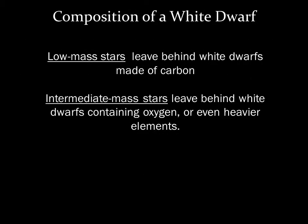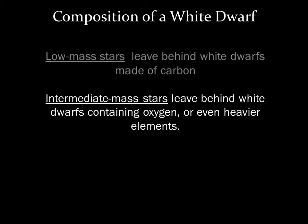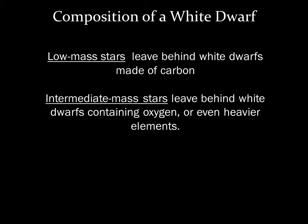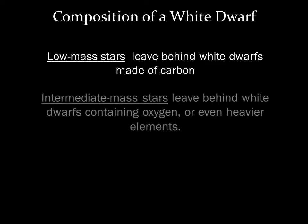The last type of fusion a one solar mass star like our Sun can do is helium to carbon. Therefore, a white dwarf left behind by a one solar mass star will be made mostly of carbon. Some intermediate mass stars can fuse carbon into oxygen, so these stars will have white dwarfs with carbon and oxygen.